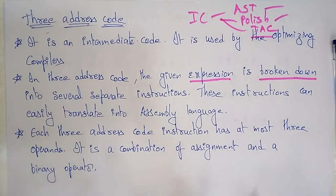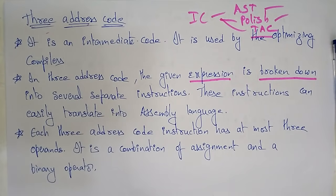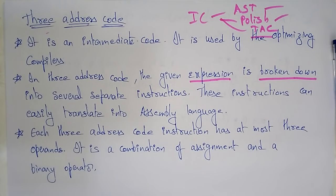Suppose if you didn't understand any topic, you would just divide the topic into several smaller topics. If you read point by point, then you can easily understand. In the same way, the compiler, if it wants to convert the source code from high-level language into assembly-level language, this three address code breaks the expression into several separate instructions so that it can easily translate into assembly language.